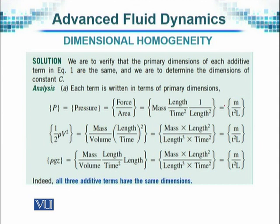The second term is half rho times v square. Half is a constant, so it has no dimension. Rho is density, which is mass per unit volume, times v square. Velocity is distance over time, so velocity squared has dimensions of length squared over time squared. For density we have mass over volume, and for velocity we have length over time. When we simplify and cancel out the terms, we are left with M over T squared times L.